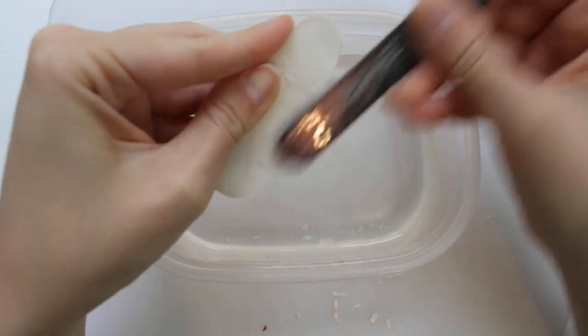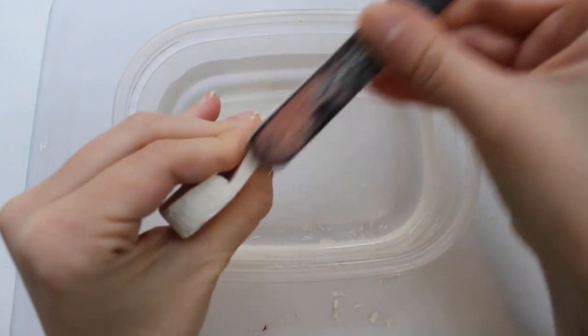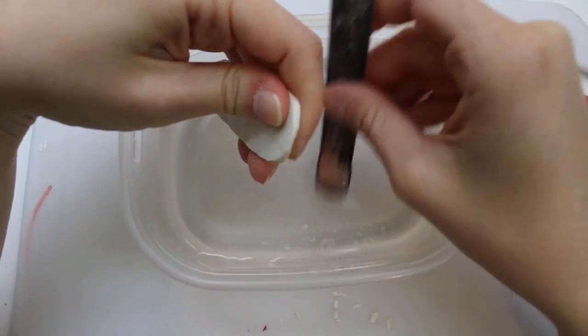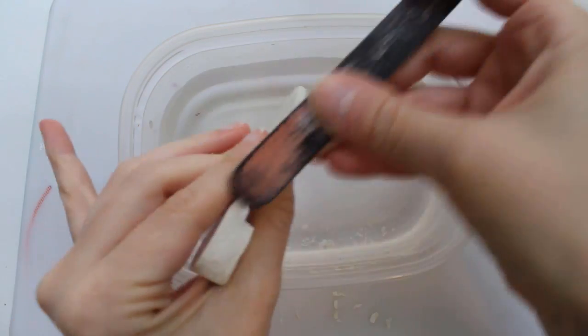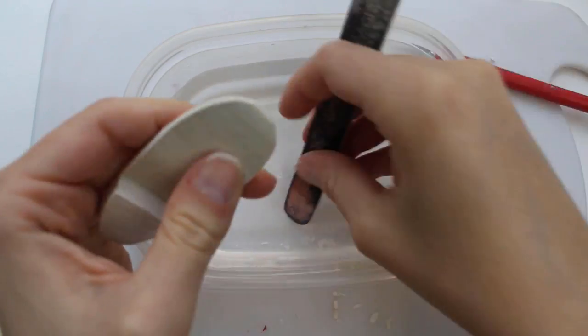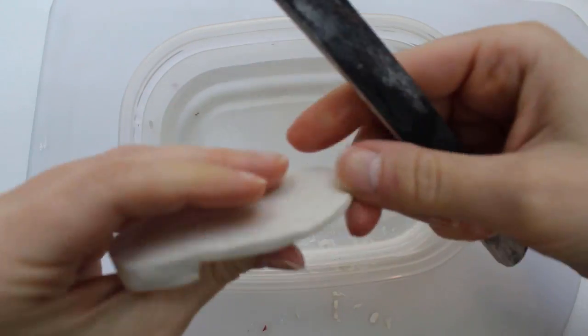Then it's time for sanding, my least favorite part of this hobby. I wet sand while wearing my respirator. The water not only helps control the dust, but gives a smoother finish to the sanded piece. For this project, I use a coarse nail file and some 320 grit sandpaper.